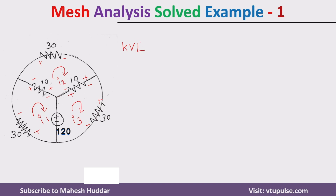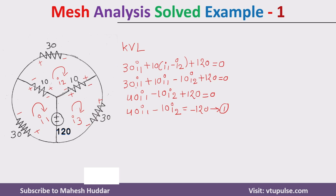By using Kirchhoff's voltage law we need to find the current in each loop. First we need to find the equation for the first loop: 30·I1 + 10·(I1 − I2) + 120 = 0. By solving this equation we get 40·I1 − 10·I2 = −120. Make this equation number 1.